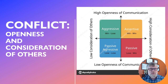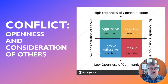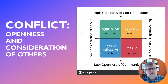This chart has two axes: the vertical axis shows low to high openness of communication, and the horizontal axis shows low to high consideration of others. In the top right, we have assertive communication — high openness and high consideration of others. Assertive communication uses I-statements, states what the speaker will accept, and frequently draws boundaries.